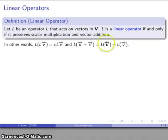What that means in particular: if I apply the operator to a scalar multiple of a vector, I get the scalar multiple of the linear operator applied to the vector. And if I have the linear operator applied to the sum of two vectors, it gives me the sum of the linear operators applied to the vectors individually.